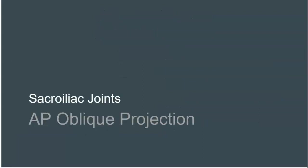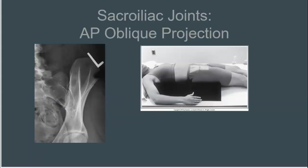Let's move on to the AP oblique projections for the SI joints. Image analysis guidelines state that the ilium and sacrum should be demonstrated without superimposition, and the SI joint should be demonstrated open.